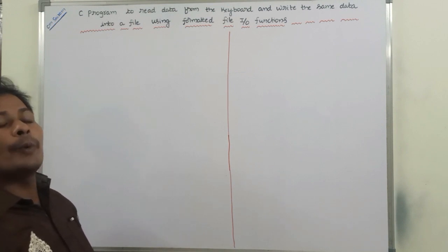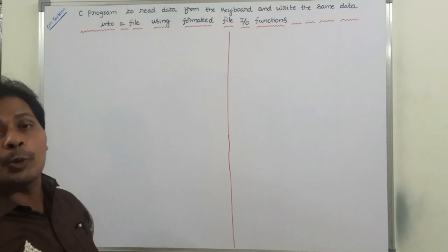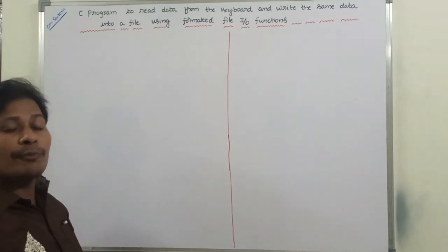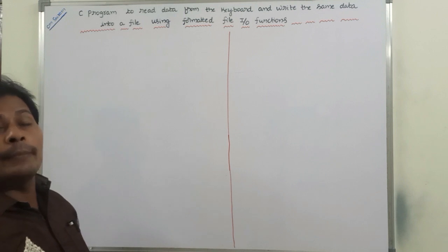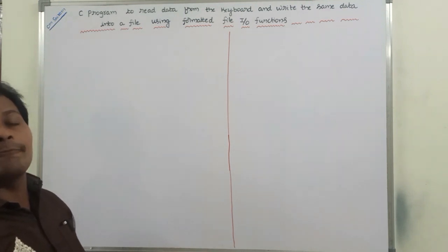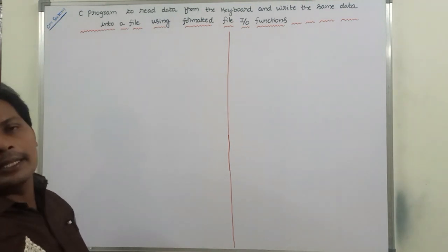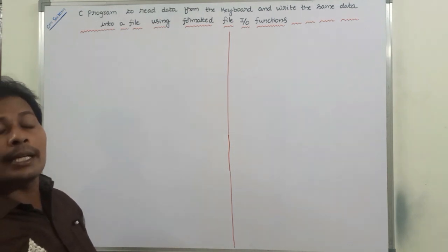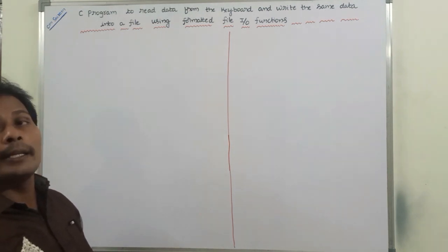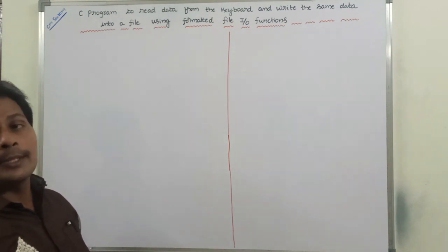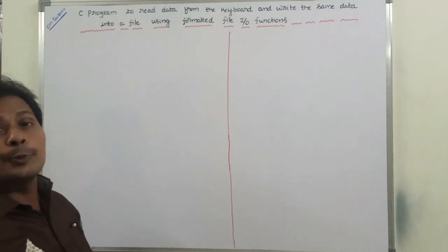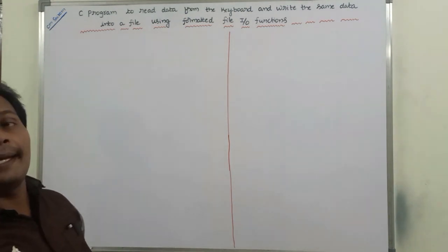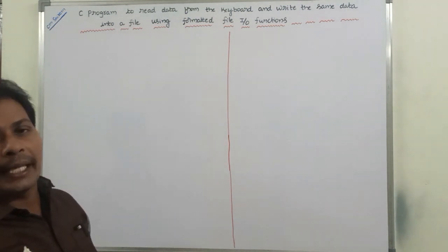In the previous video, we already discussed two important programs. The first one is a C program to copy the contents from one file to another file. The second program is a C program to merge the contents of two files into a third file. Please refer to those two programs in my YouTube channel in the playlist called C programming.